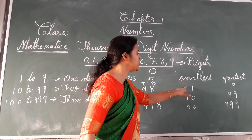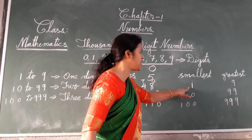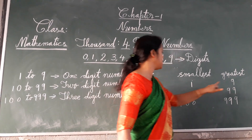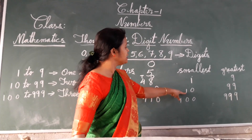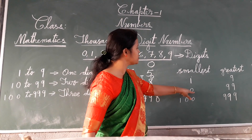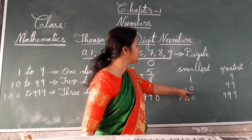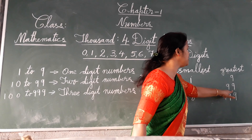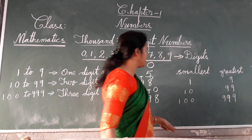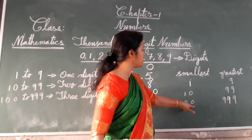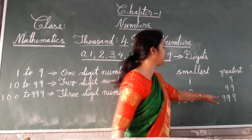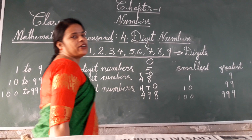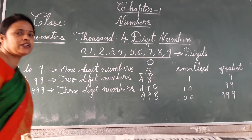The smallest one digit number is 1 and the greatest one digit number is 9. Ten is the smallest two digit number and 99 is the greatest two digit number. Now let us move on to three digit numbers and then four digit numbers.